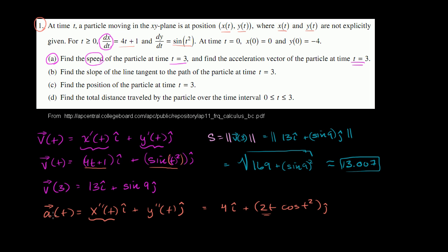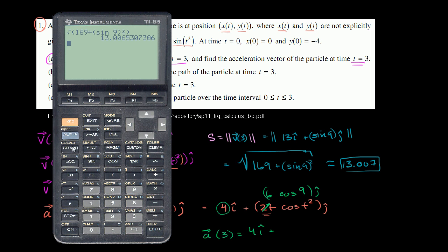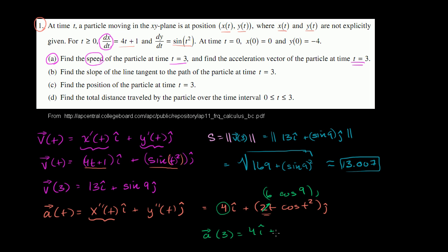That is the acceleration vector as a function of t, but they want it at t equals 3. So 4 still stays 4, and we have 2 times 3, which is 6, times cosine of 9 in the j direction. Our acceleration vector at time 3 is 4i plus 6 cosine of 9 j. Using the calculator, 6 times cosine of 9 is approximately negative 5.467. So the acceleration vector is 4i plus negative 5.467j.